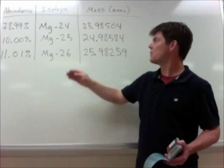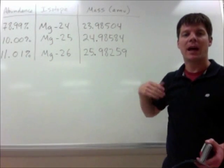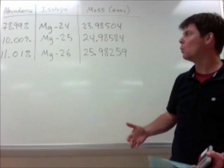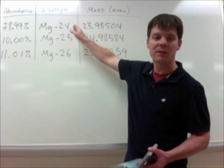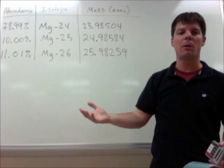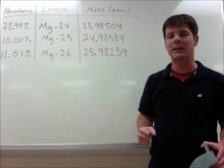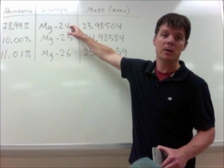Because these different isotopes are not found at equal levels, we can't just add up their masses and divide by 3 and think that's going to be the average. We have to have some way of working with the fact that magnesium-24 is contributing so much more to the average. Because again, when we're looking at a sample of magnesium atoms, most of them are going to be this version.